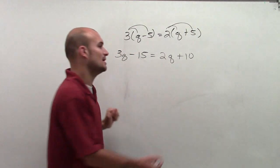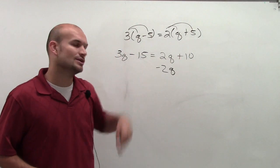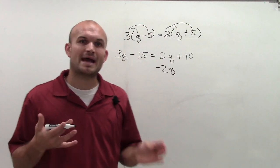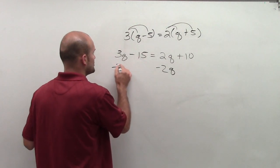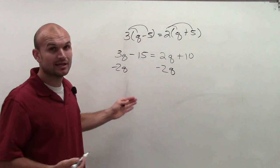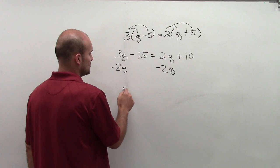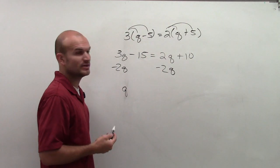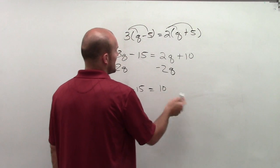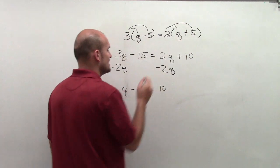So I'm going to get rid of the q on the right side by subtracting 2q. Remember, subtracting 2q, you have to do that on both sides to produce equivalent equations. I can only subtract the 2q from the 3q, as those are like terms. So 3q minus 2q is just 1q, or as we write it, q, minus 15 equals 10. As 2q minus 2q goes to 0, and 0 plus 10 is 10.